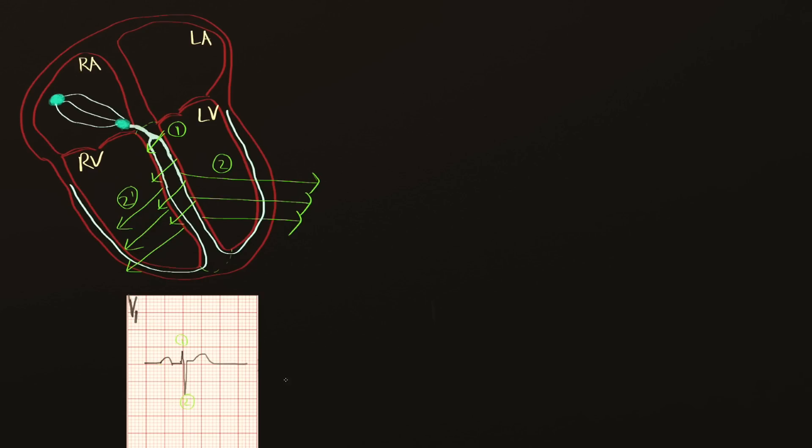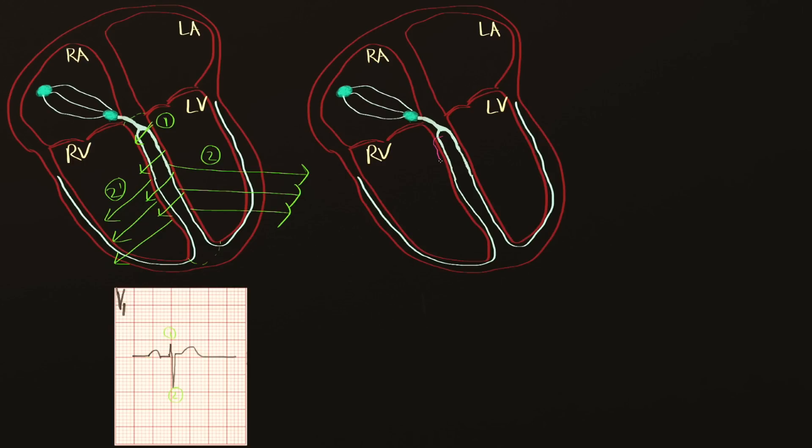Now let's look at an abnormal conduction pattern with bundle branch block. Here's another heart, and this time we're going to produce a block. Conduction will go through the bundle of His and then through the left bundle branch. Therefore, depolarization of the septum will actually be normal. It won't be any different than it is usually.